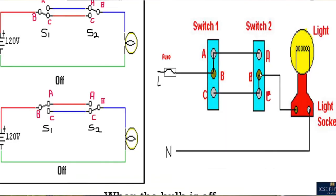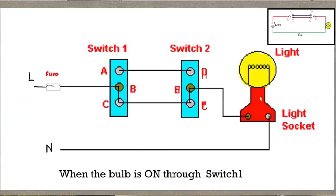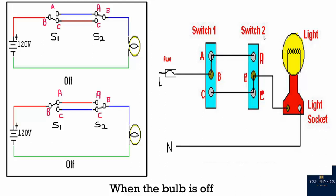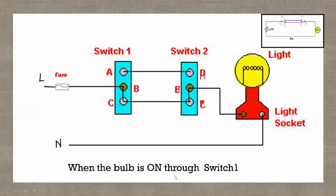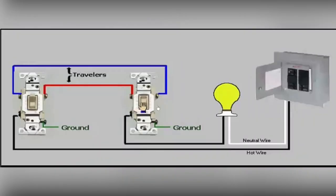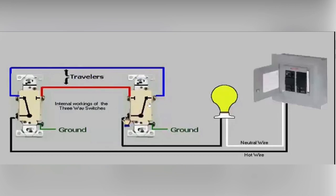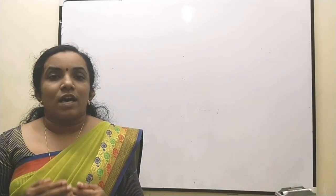A dual control switch is operated in two ways: shifting the knob to the right connects the live wire at terminal B to terminal A, completing the circuit and allowing current to flow. Shifting the knob to the left connects terminal B to terminal C, breaking that connection. This way, one bulb can be operated using two switches — a person switches the light on going up the stairs and switches it off at the top.